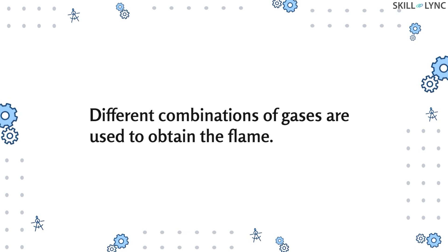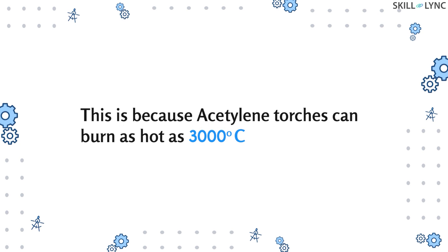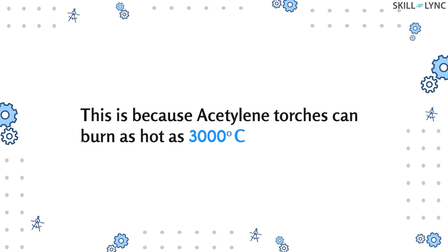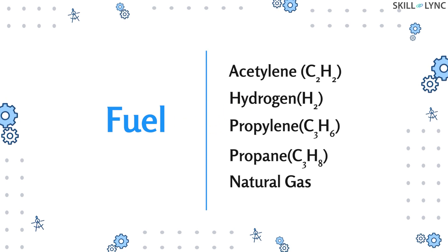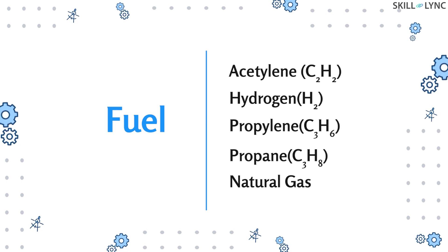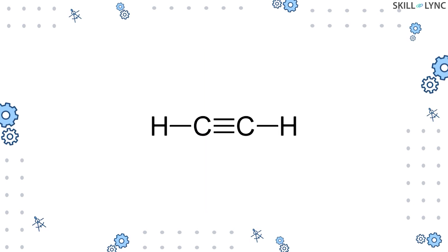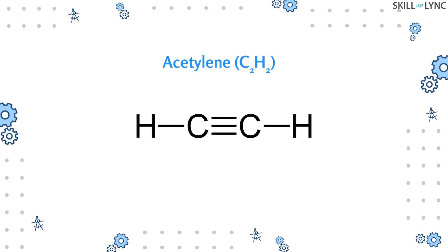Different combinations of gases are used to obtain the flame. The most common fuel used is acetylene, because acetylene torches can burn as hot as 3000 degrees. Apart from acetylene, hydrogen and propylene are also used as fuels. The type of fuel used changes based on the workpiece and availability. Thinner workpieces use oxygen and natural gas, as it generates much lesser heat than acetylene.